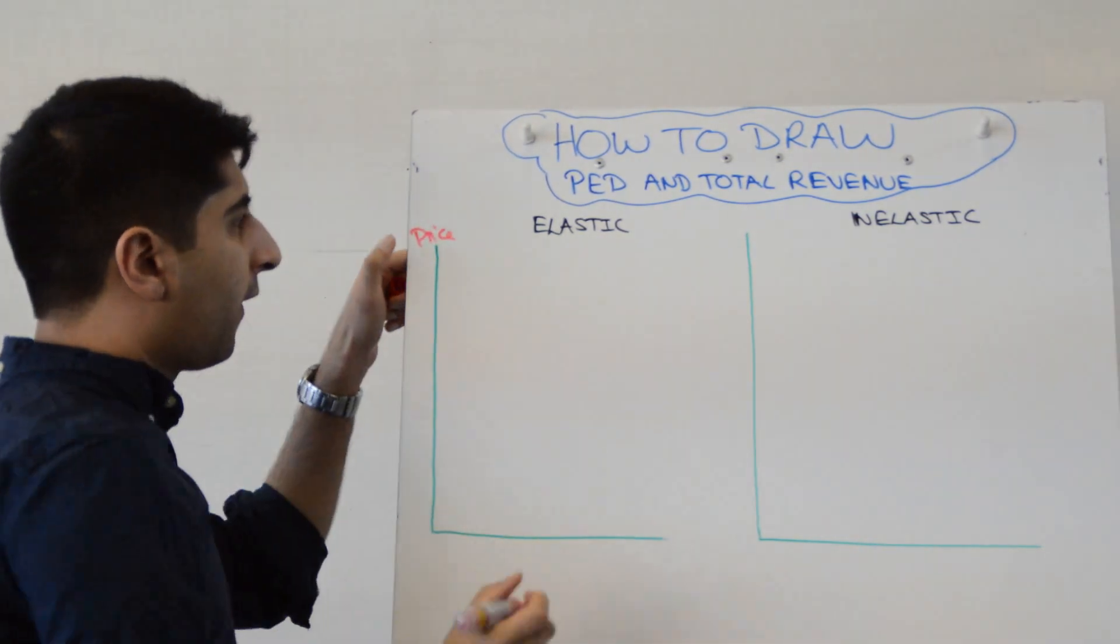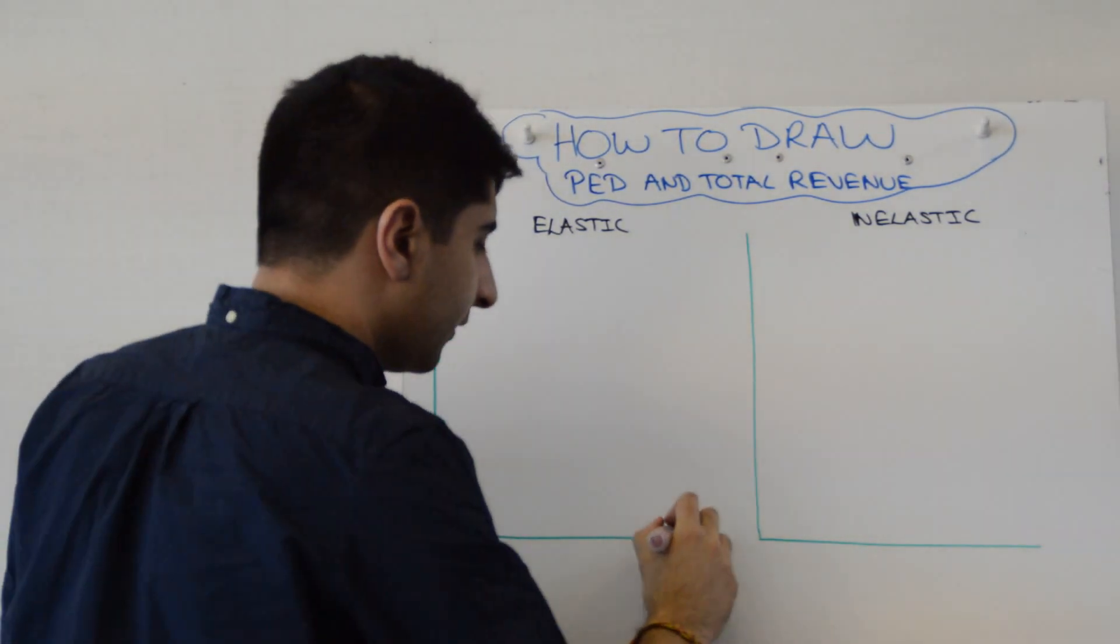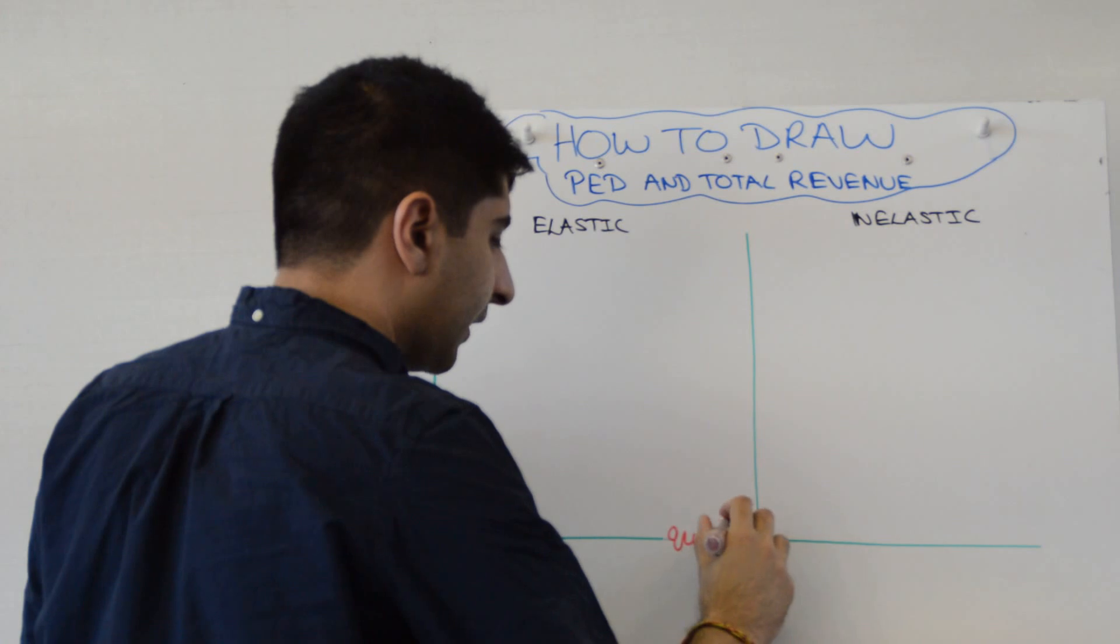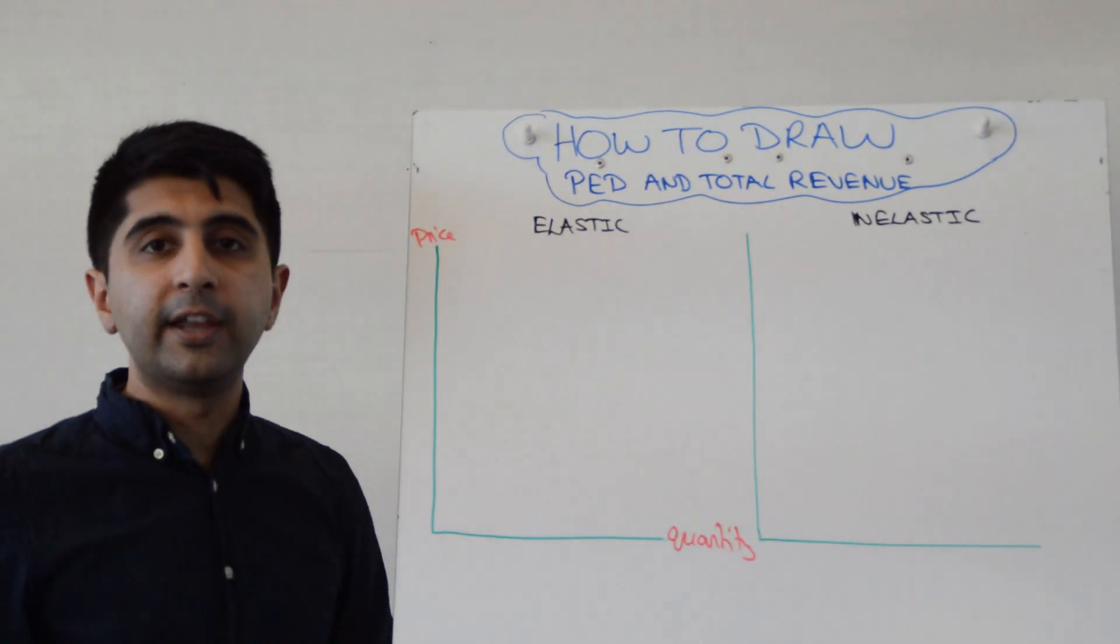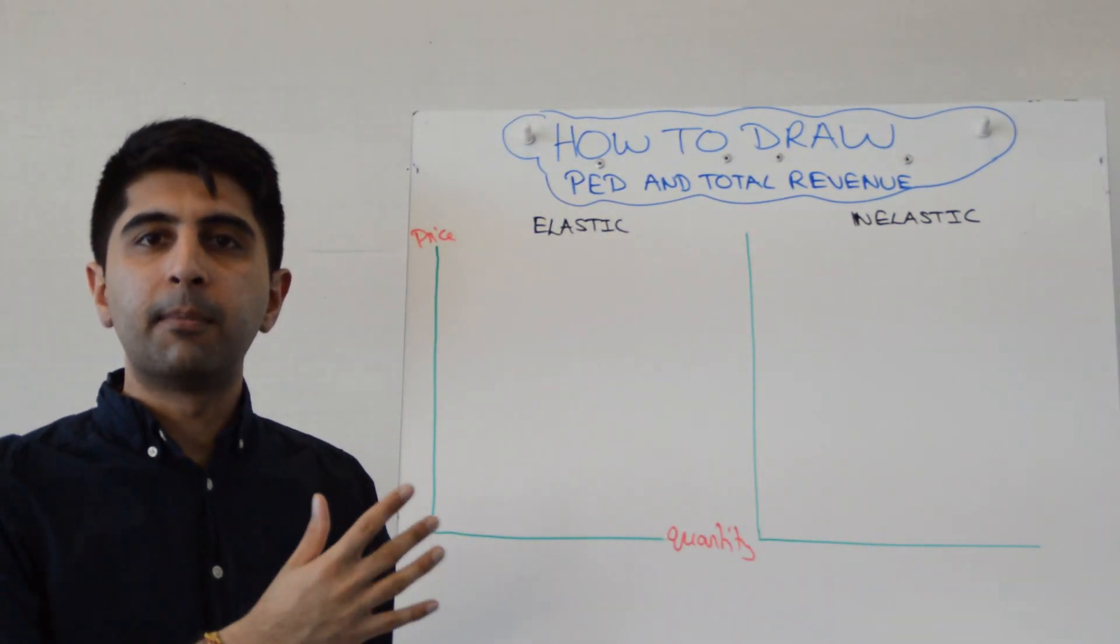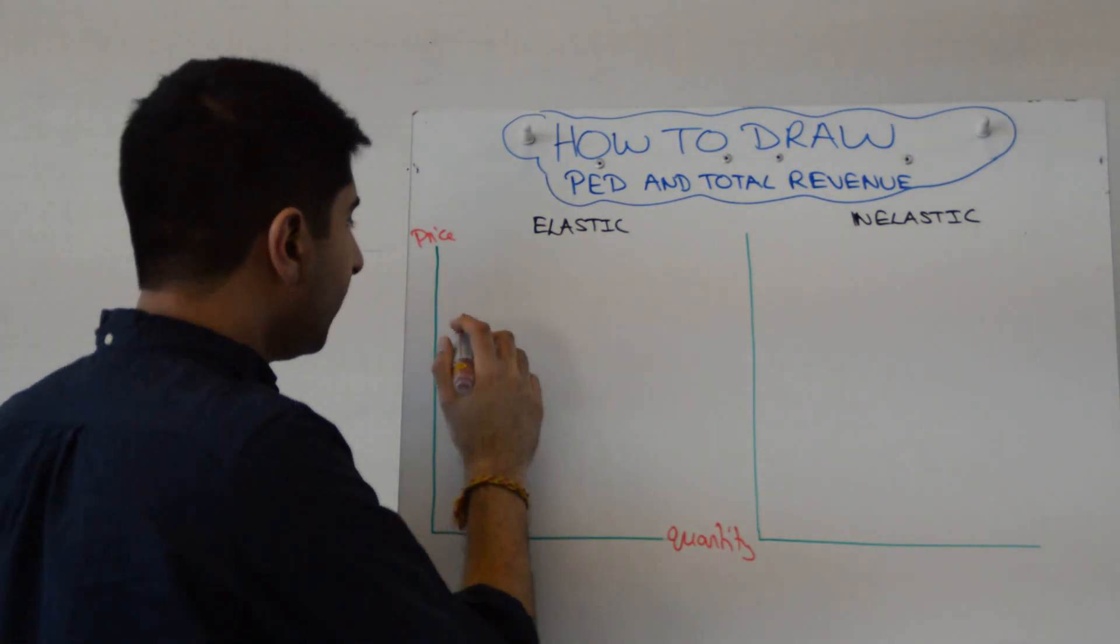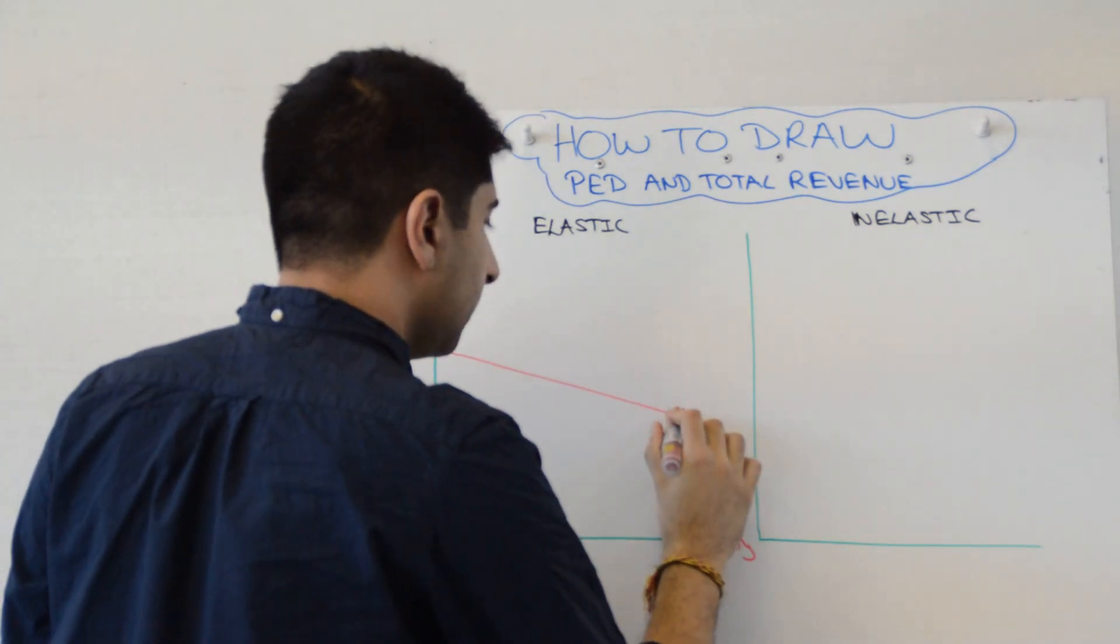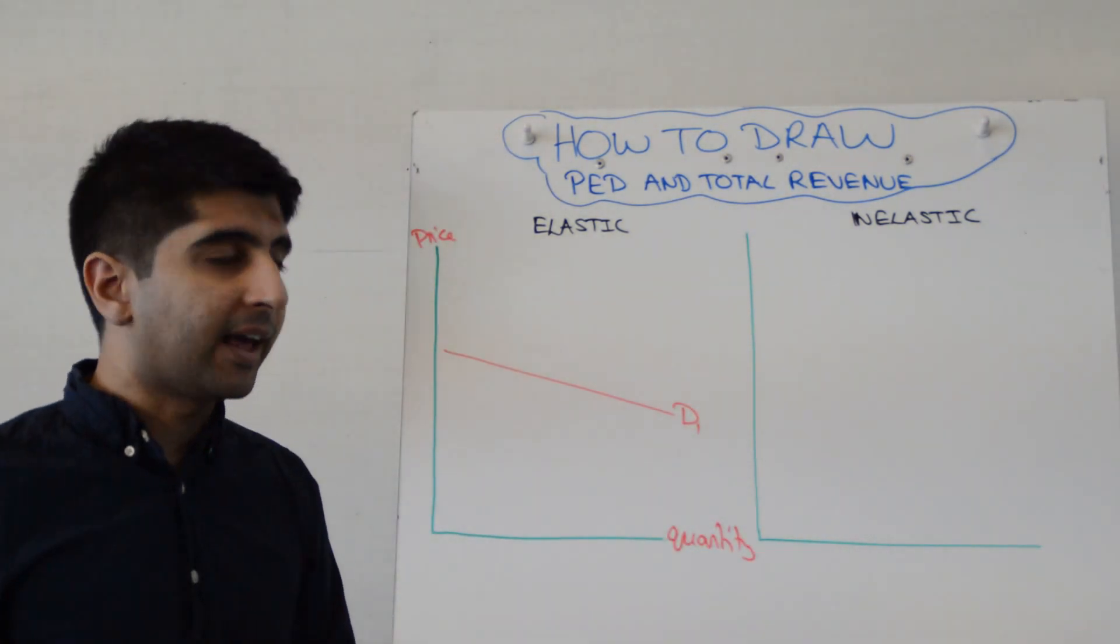We want to label our axis. Price on the y-axis, quantity on the x-axis. You, of course, must apply to relevant markets given the markets in your exam. And you want to draw a demand curve that's pretty price elastic, so quite shallow right here.